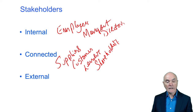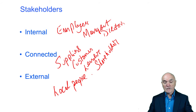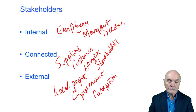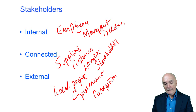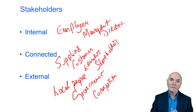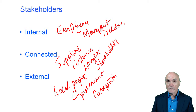Finally we have external stakeholders — people with no contractual relationship at all. For example, the local people, government, and competitors. If there's a large factory at the end of your road with lorries going up and down in front of your house, then you are being affected by that organisation without any contractual relationship with it.